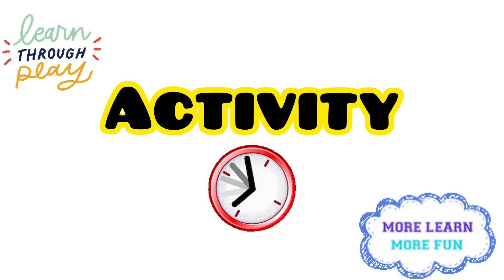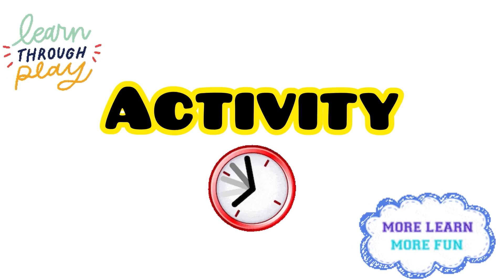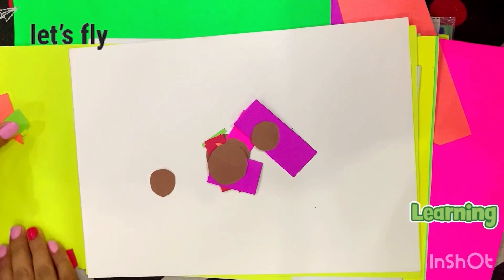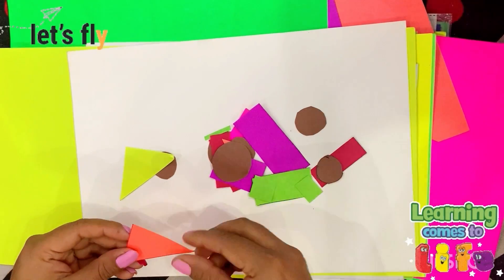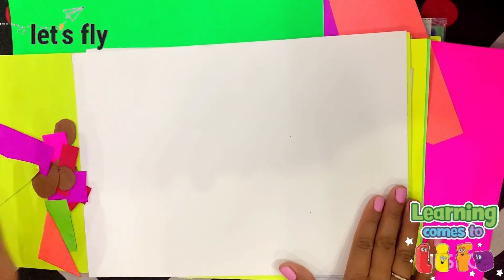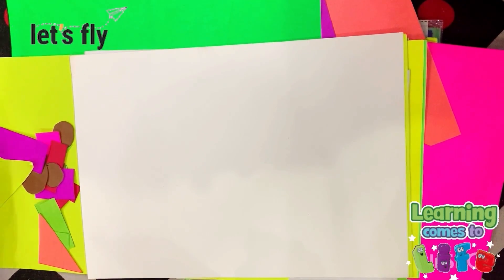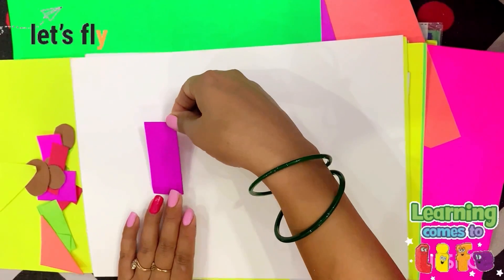Come students, let us do an activity and learn through it and have more fun with learning. As you can see, I have many shapes with me — some circle, some square, some triangle and some rectangle. Come let's see what we can draw with these shapes. I am thinking of drawing a train. What is the train's first part? The engine. So let us make an engine first. I am putting some ferricol in one rectangle and placing it like this.